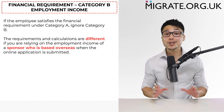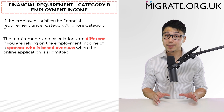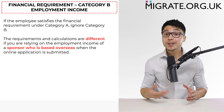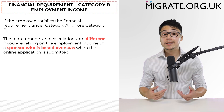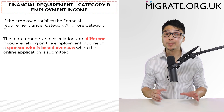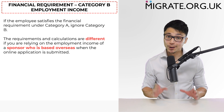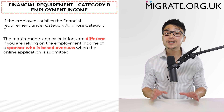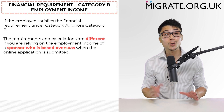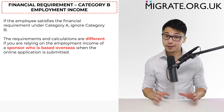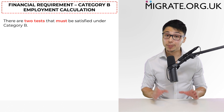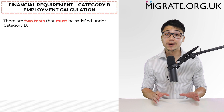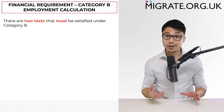Another thing worth noting is that sponsors based overseas when the application is submitted can also include their employment income under category B, but again the requirements vary slightly. Since only a small percentage of sponsors are based overseas when the application is submitted, this video will discuss the calculation and requirements as it applies to sponsors based in the UK when the online application is submitted. Sponsors who wish to rely on category B must satisfy two different tests — both tests must be satisfied to include employment income under category B.